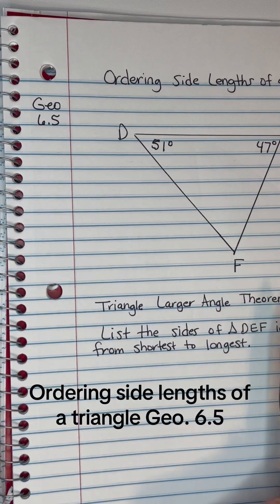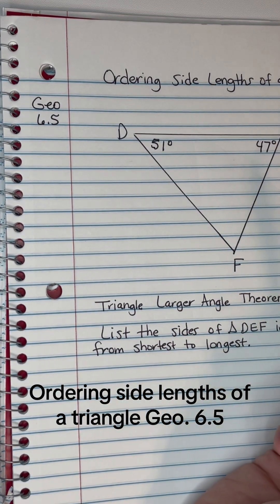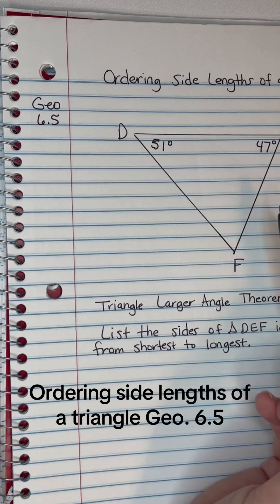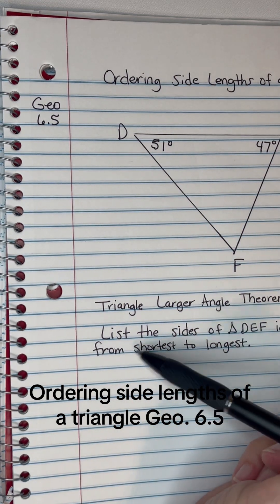Okay, we're going to use the triangle larger angle theorem on this problem. This is when they're asking me to list the sides of triangle DEF in order from shortest to longest.